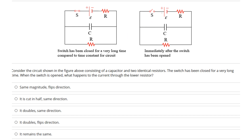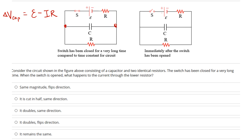We know the direction is the same — left to right — but we need to find the magnitude, which depends on how much the capacitor has charged up. Between any two points, delta V is the same. So delta V across the capacitor equals ε minus i·R. At the end, when there's no more current flowing through that branch, the current is ε/(2R), so the capacitor charges up to a potential difference of ε/2.